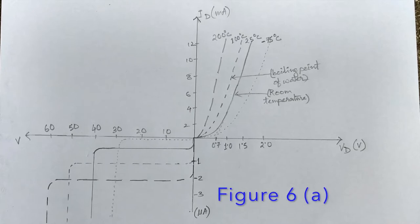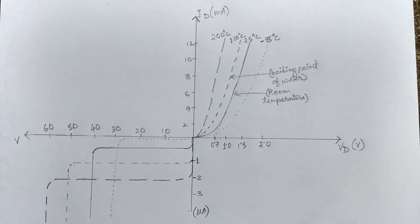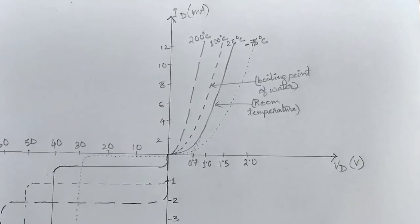Figure 6 shows the change in VI characteristics of silicon diode with temperature change. From the forward bias region, it is observed that